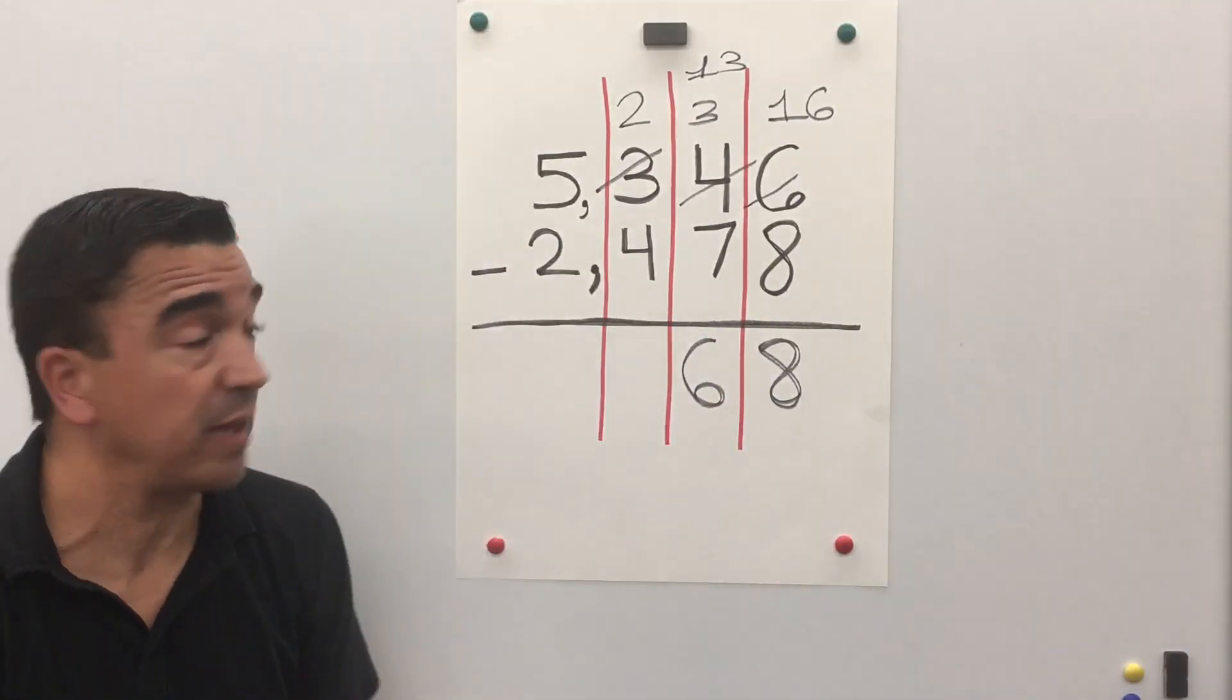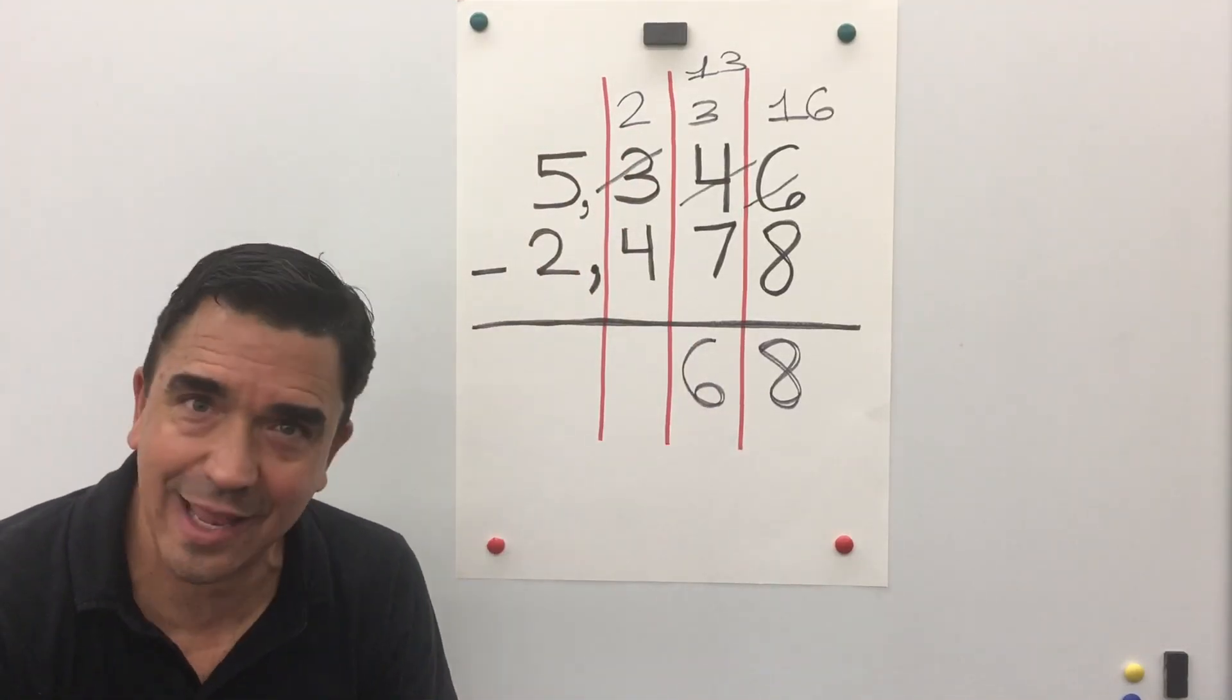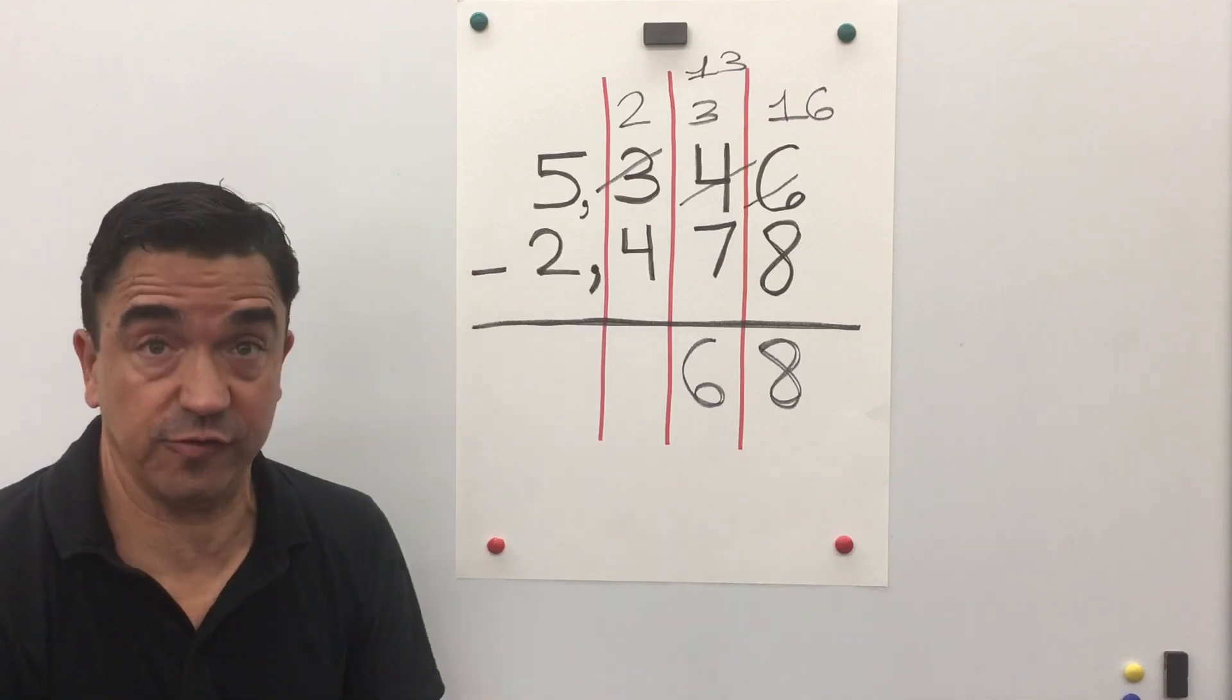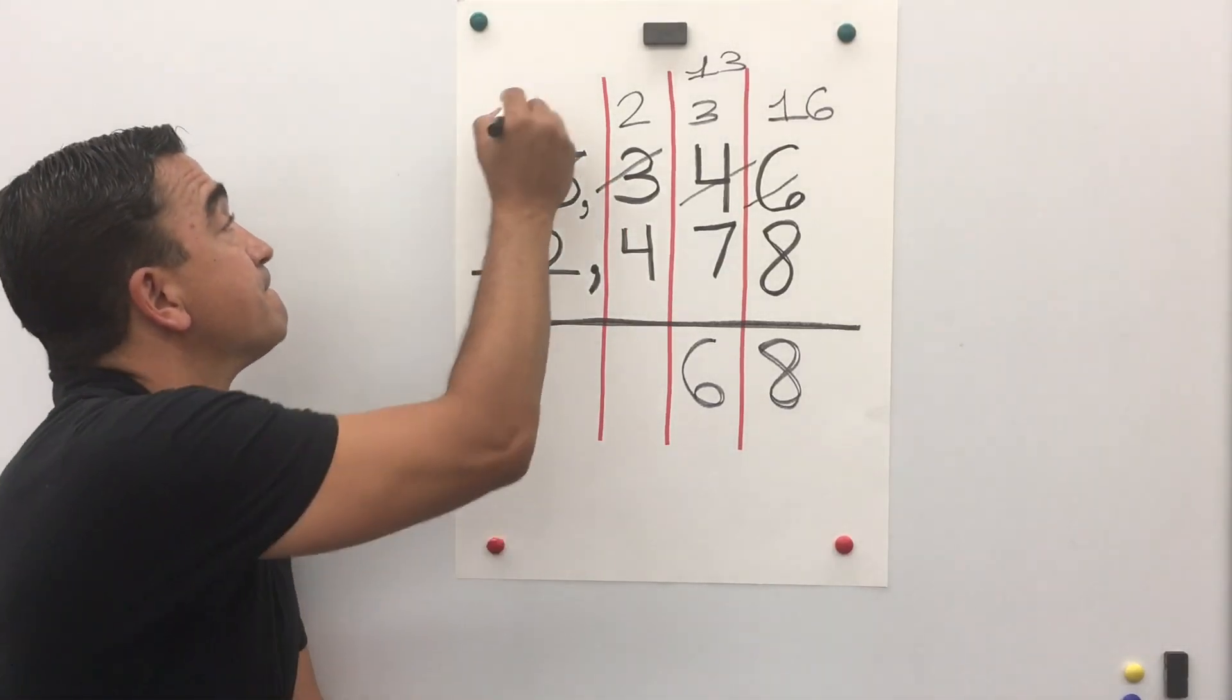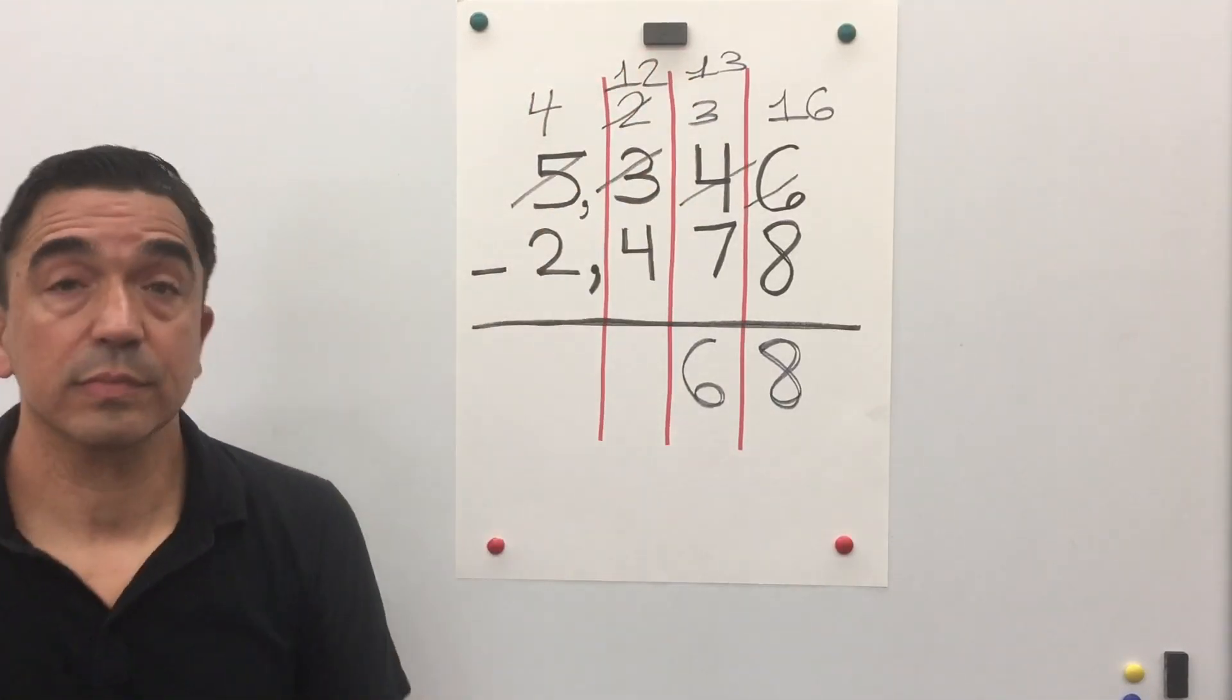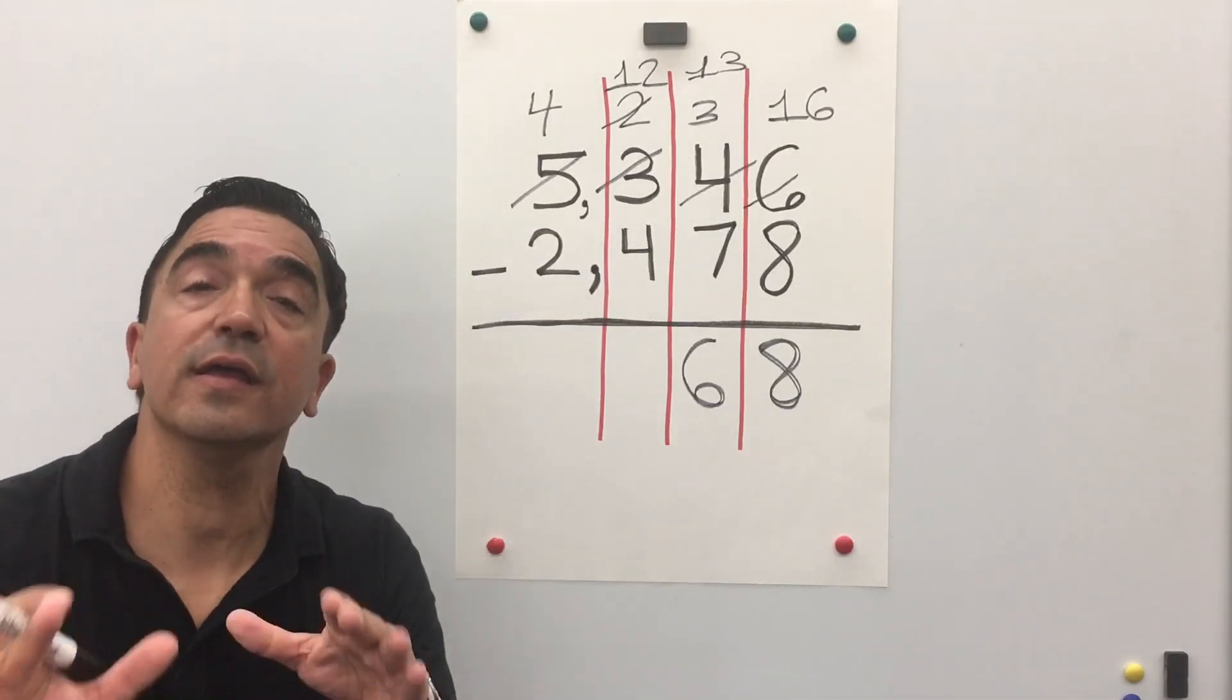Now, we're gonna go to the hundreds place. 2 minus 4. Once again, we can't do it. So we're gonna have to borrow from the thousands place. 12 minus 4 is 8.